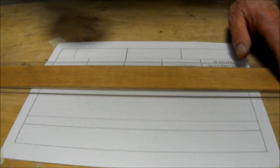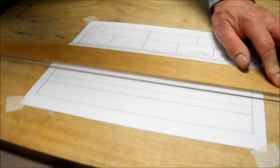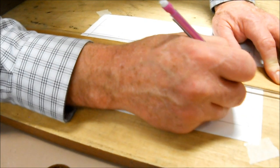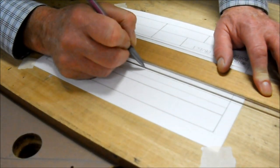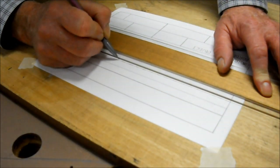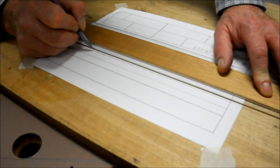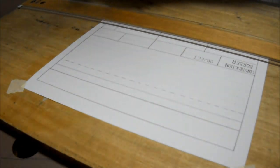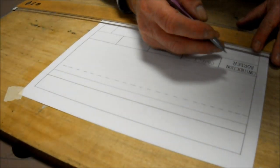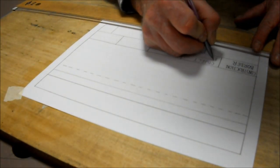My fourth line is going to be a hidden line. Hidden lines are just a series of short dashes. Using your T-square, just come across here and draw a series of short dashes. There's no need to measure them. This represents a hidden line. The fourth line here is going to be a hidden line.